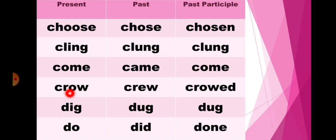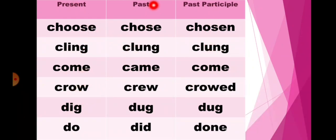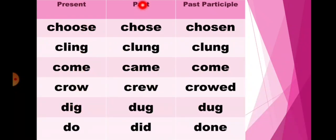In present if it is crow, then in past it will change into crew, and in past participle crowed. In present if it is dig, then in past it will change into dug, and past participle also dug. In present if it is do, then in past it will change into did, and past participle done.